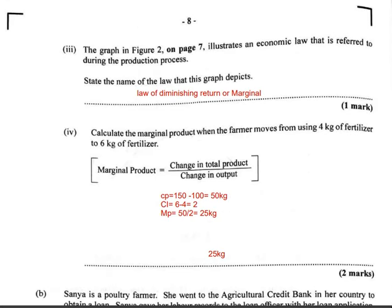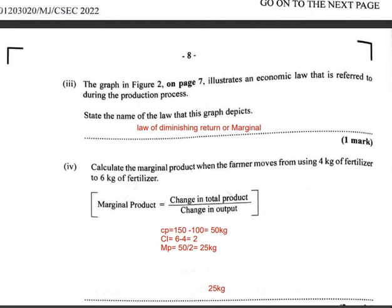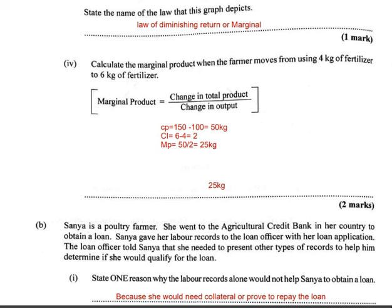The graph in Figure 2 illustrates an economic law referred to during the production process. They ask for the name of the law the graph depicts. The law would be the Law of Diminishing Returns — referring to the ranges in which production yield moves relative to input. You could also state the Law of Diminishing Marginal Returns. Either of those two answers would be acceptable.